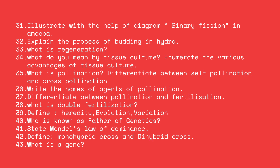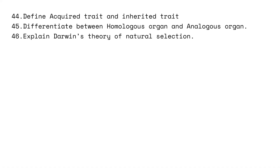Moving to heredity and evolution: define heredity, evolution, and variation. Who is known as the father of genetics? State Mendel's law of dominance. Define monohybrid cross and dihybrid cross. What is a gene? Define acquired trait and inherited trait. Differentiate between homologous organs and analogous organs. Explain Darwin's theory of natural selection.